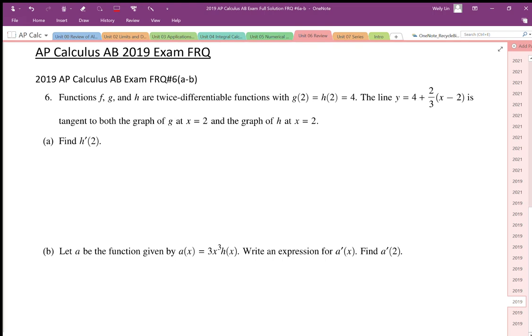Number six says functions f, g, and h are twice differentiable functions where g(2) and h(2) equal 4. So they coincide at the point x equals 2, y equals 4.